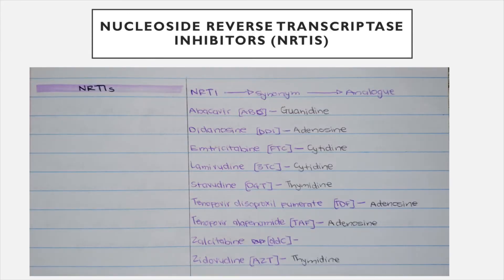For nucleoside reverse transcriptase inhibitors, the most common ones to know are abacavir, emtricitabine, lamivudine, stavudine, tenofovir, and zidovudine — which is mostly given to kids as prophylaxis for HIV. The most important ones are tenofovir and emtricitabine.